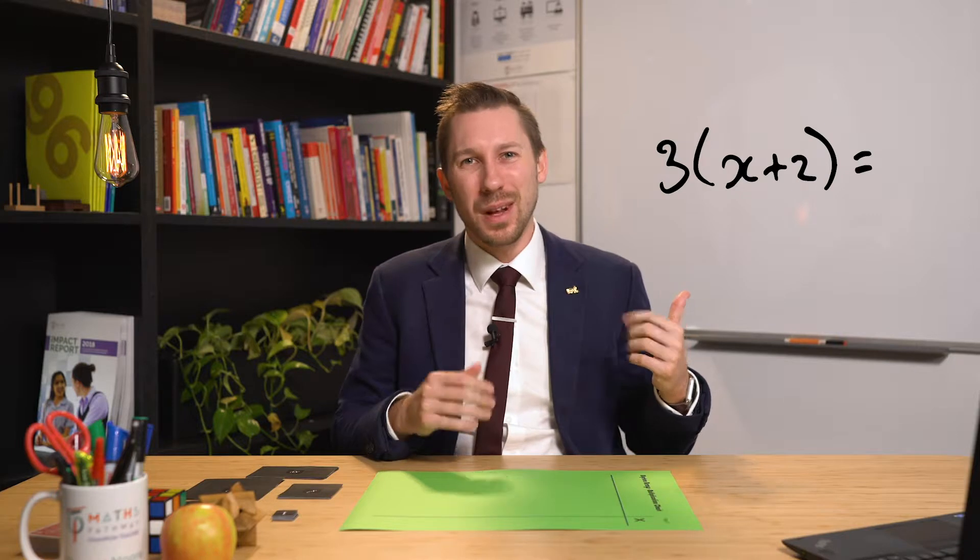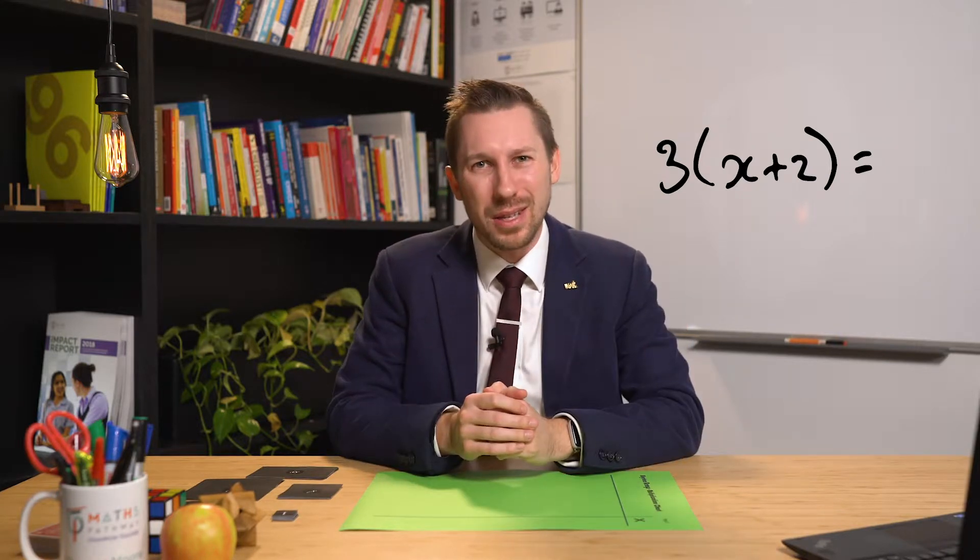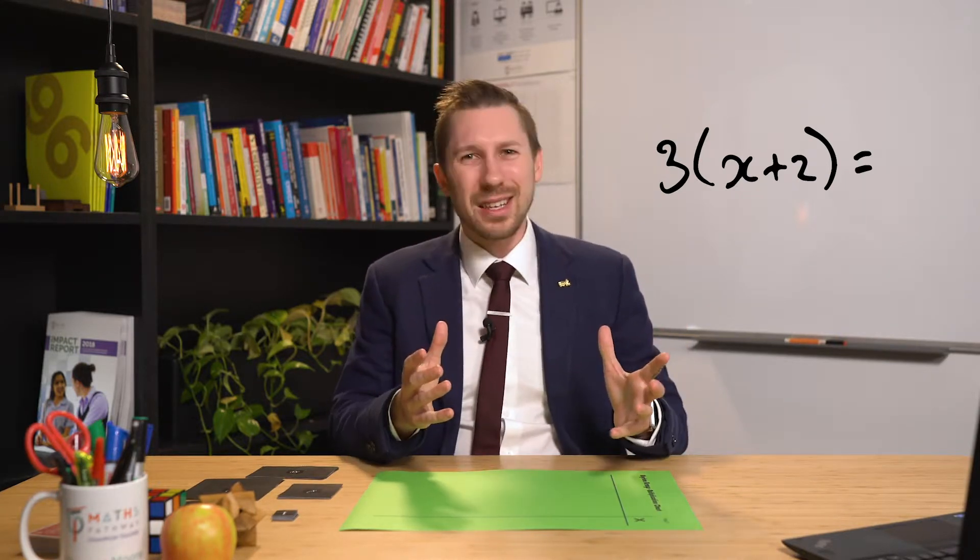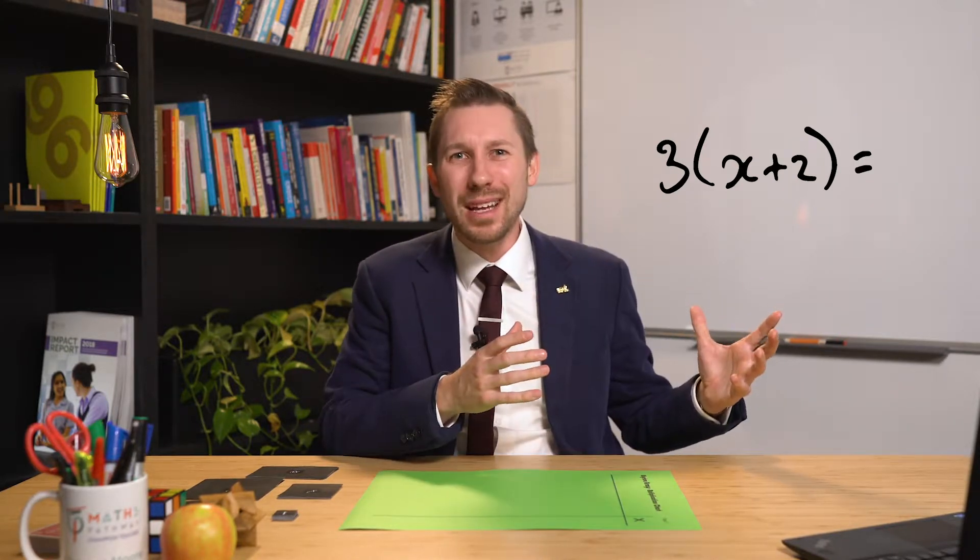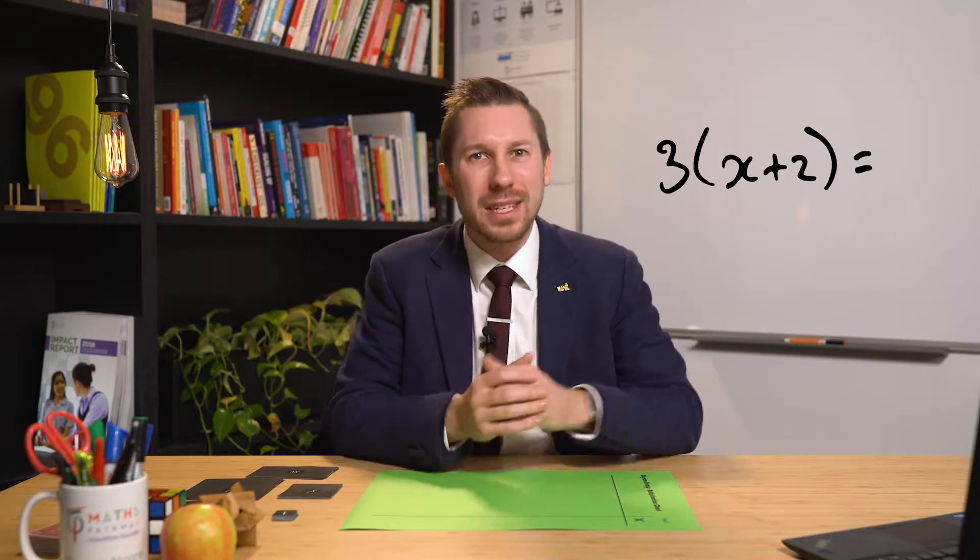Algebra is quite abstract in its nature and because of this, many students initially struggle with it. Let's take this question here, for example: 3 multiplied by x plus 2. When I look at this, I think, well what does the x even mean? And quite often so do the students. And then what do the brackets mean and how does that all come together?